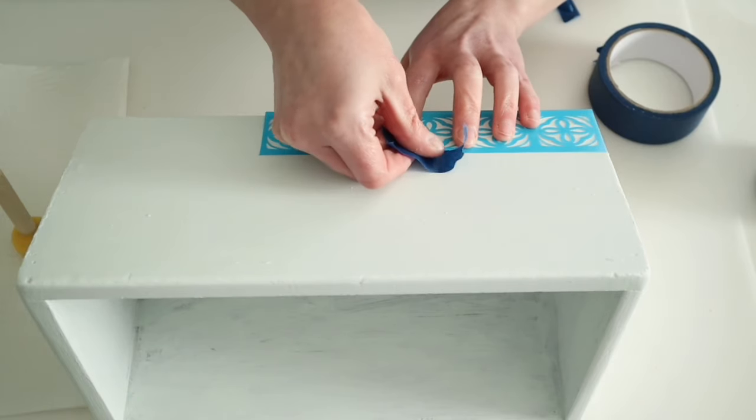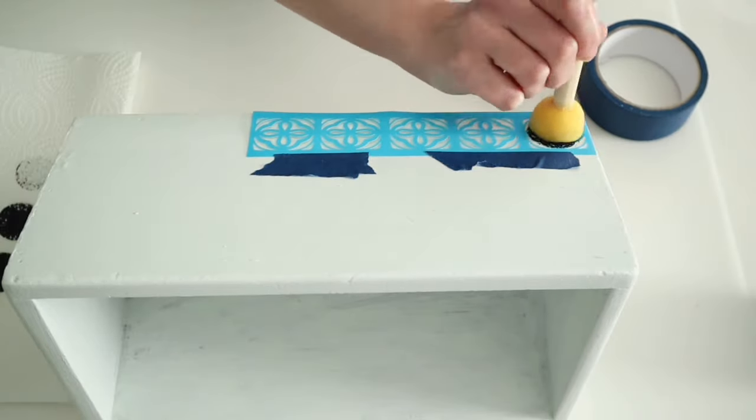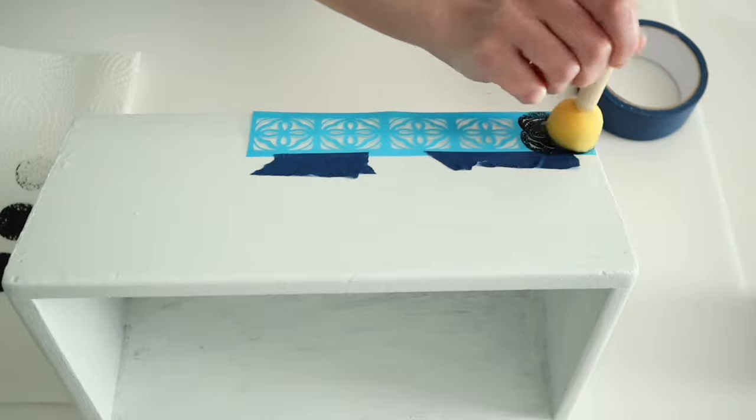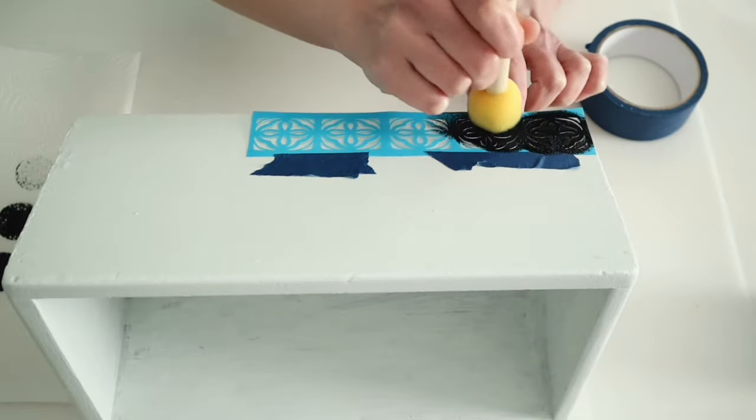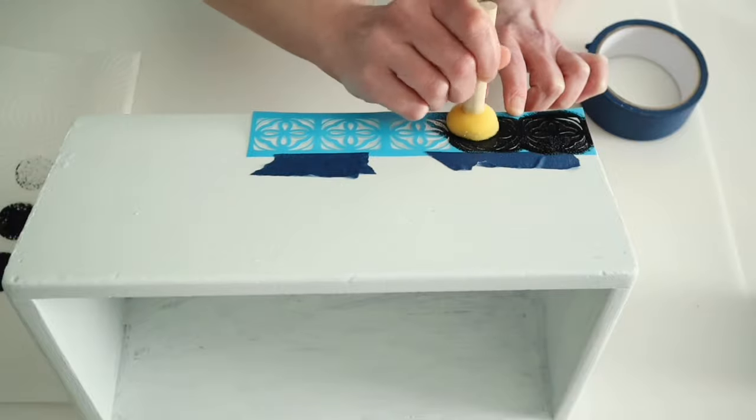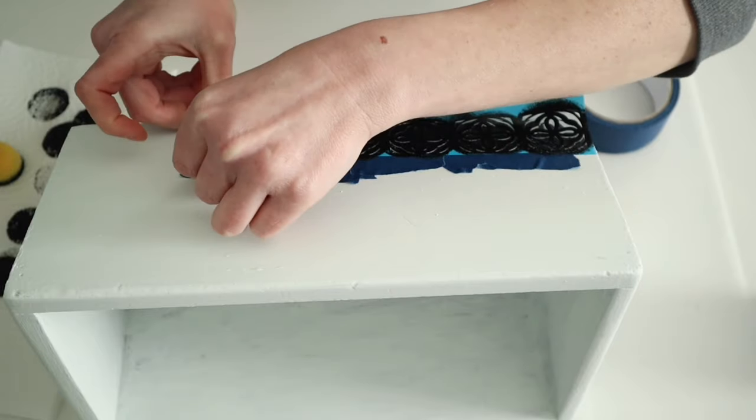Now, I went ahead and cut down the piece of the stencil that I wanted to use. This does have a sticky back, but I wanted to be able to reuse it. So I'm just going to use some painter's tape on the stencil to keep it in place. And then I'm going to use some black paint and one of my little Dollar Tree sponges to sponge the stencil on.